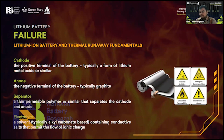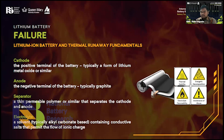The fundamentals about thermal runaway: the battery has four main parts — the first one is cathode, the second is anode, then separator, and the electrolyte. The cathode is the positive terminal of the battery, typically a metal oxide. The anode is the negative terminal, typically graphite. The separator is a polymer sheet, similar to polypropylene. The electrolyte is a solvent containing conductive salts that permit the flow of ionic charge.